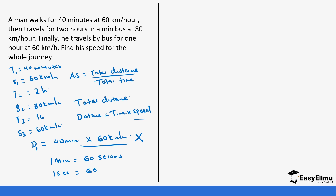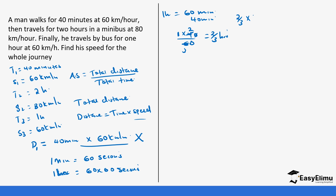Since one hour equals 60 minutes, 40 minutes equals 40/60 = 2/3 hours. So distance one = (2/3) × 60 = 40 kilometers. The hours cancel leaving kilometers.